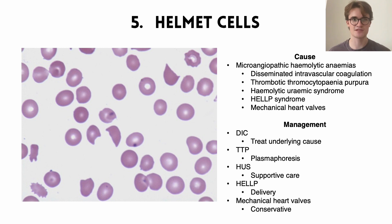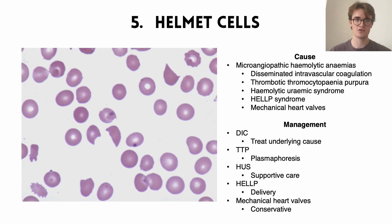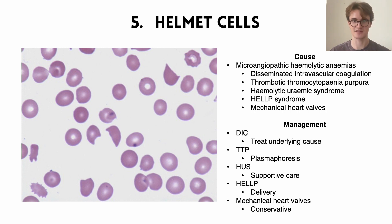The fifth blood smear presentation to know is helmet cells. Looking at this blood smear, we see normal red blood cells alongside some abnormal red blood cells that look like they've been chopped in half — like a helmet you could put on. This is due to the mechanical shearing of red blood cells by something in small blood vessels. In Latin terms, these conditions are called microangiopathic hemolytic anemias: small vessels causing the problem, red blood cells being broken down, resulting in reduced red blood cells and haemoglobin.